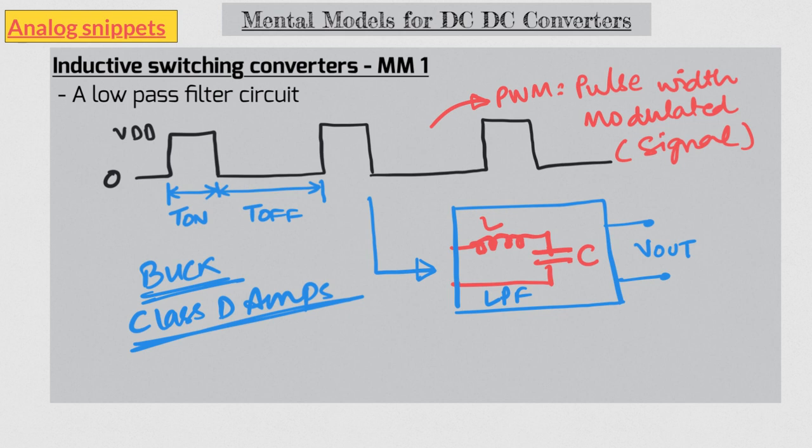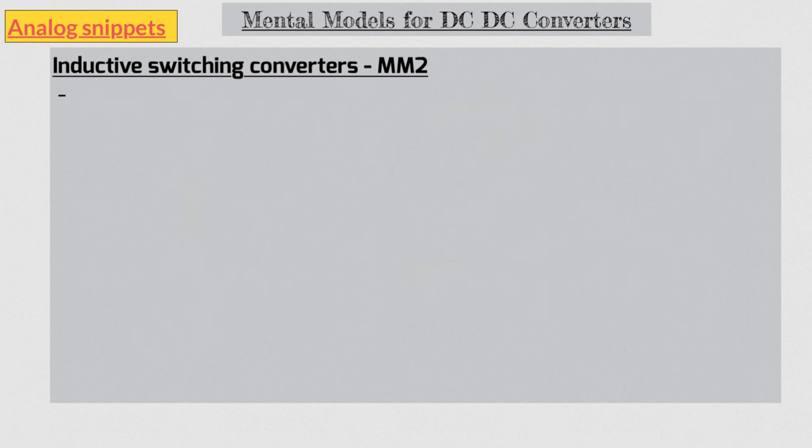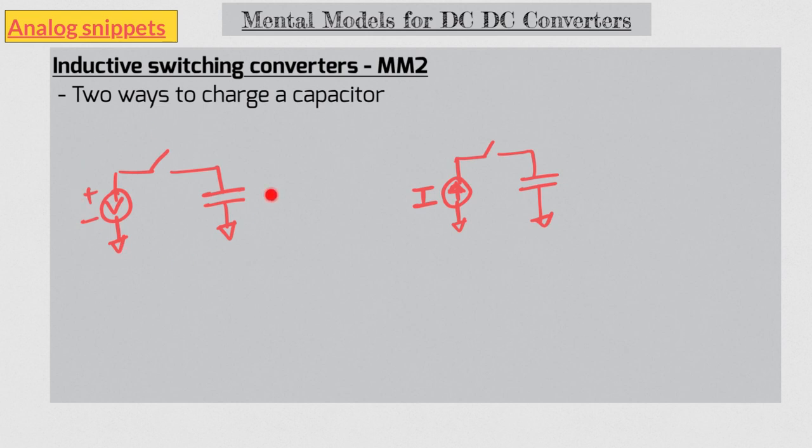Right, so this model works for a buck where output voltage is less than input voltage. But how do you explain other converters like boost where output voltage is higher than input voltage? For that we turn to our second mental model. There are two ways to charge a capacitor. One is using a voltage source. Other is using a current source. The first way is a lossy charging. That means some energy is lost while charging this capacitor.